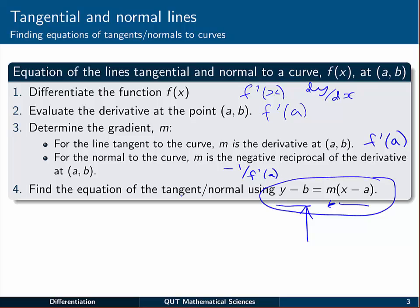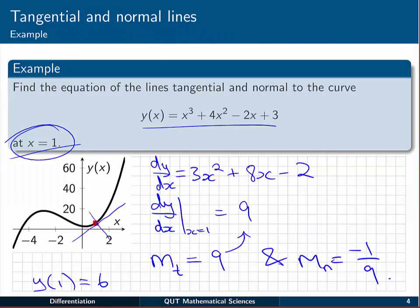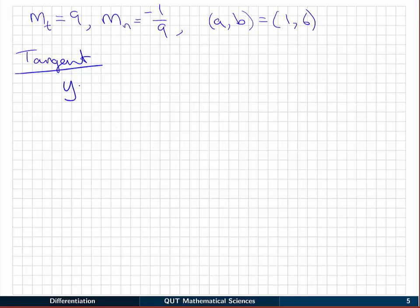Looking back at the process, it tells us that the equation of, first of all the tangent, will be y - b = m(x - a). So we have y - 6 = 9(x - 1).